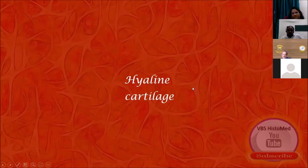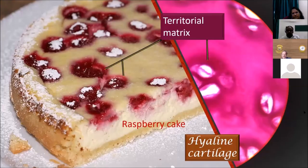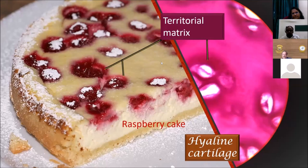Hyaline cartilage. The way I present hyaline cartilage to my students is something they love to eat — namely, raspberry cake. Compare the histology and the cake: you can see the territorial matrix marked in yellow and the inter-territorial matrix on the cake. Both resemble each other, so you can learn either from the cake or directly from the histology slide. This is a 'cake view' approach to understanding hyaline cartilage.